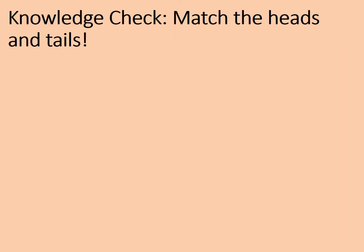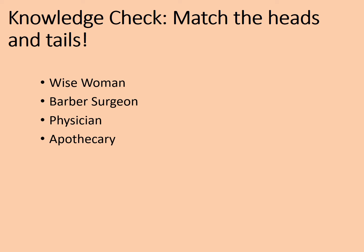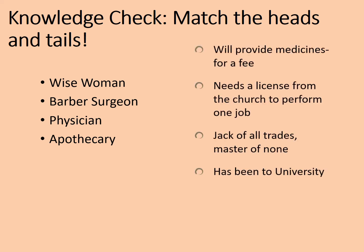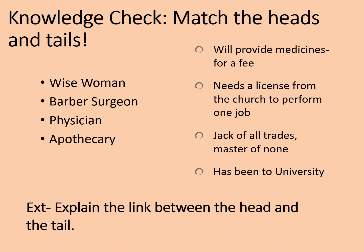Let's do a quick check to make sure you've got most of the main points. These are four of the different things we've been looking at — match the heads to the tails. The wise woman needs a licence from the church to perform one job: becoming a midwife. The barber surgeon is a jack-of-all-trades but a master of none — not qualified, but can do an awful lot for a fee. The physician is the only one that's actually been to university and got a formal qualification. And therefore the apothecary is the person who will provide medicines for a fee.